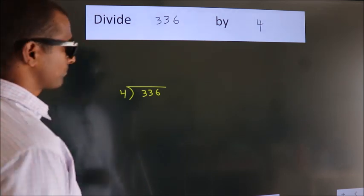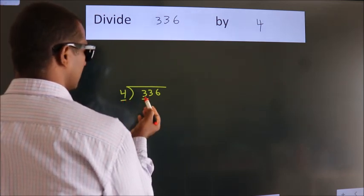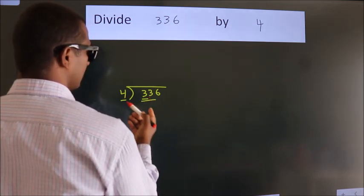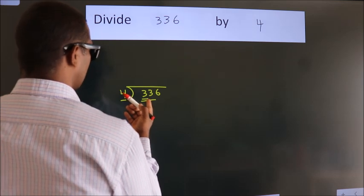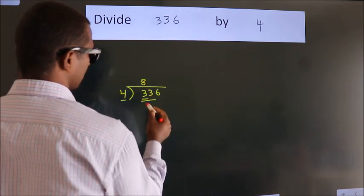Next, here we have 3. Here 4. 3 smaller than 4, so we should take 2 numbers: 33. A number close to 33 in the 4 table is 4 8s 32.